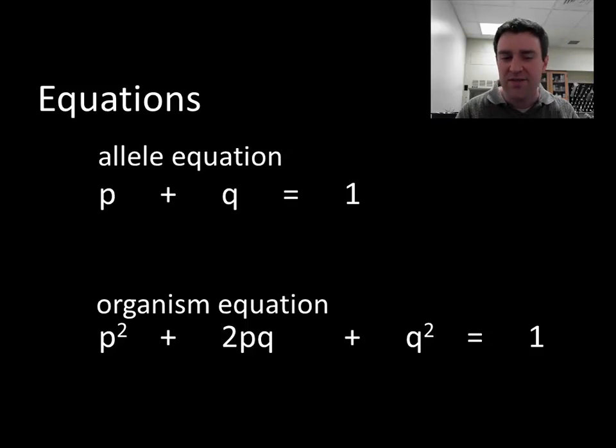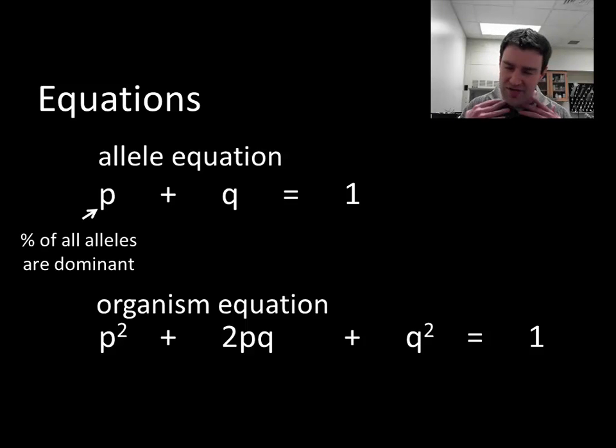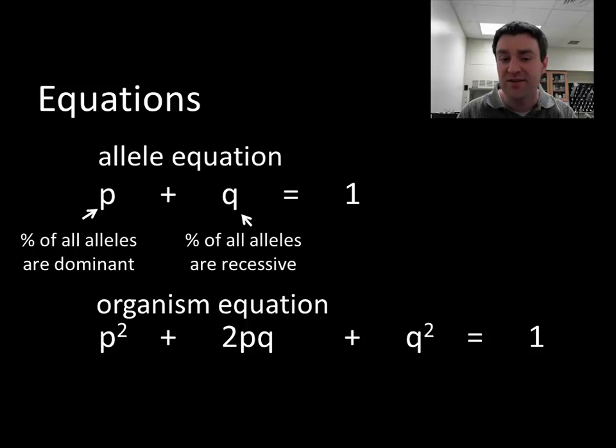P represents the percent of all alleles that are dominant. So if we were just to analyze the letters, not the organisms, how many letters would be capital in the overall gene pool. Q would represent the percent or frequency of recessive alleles. These are percents or frequencies. We always use decimals. So that's why they have to add up to be one, and really what one means is a hundred percent. For example, if 40 percent of the alleles were dominant alleles, we would say that P would be equal to 0.4.